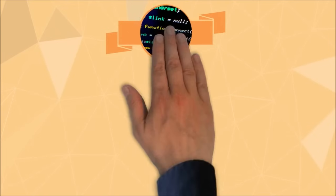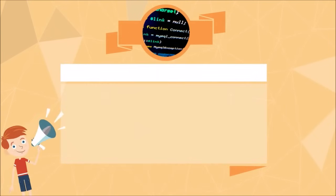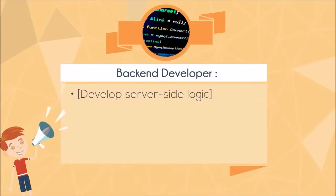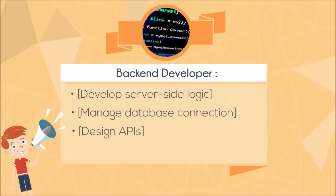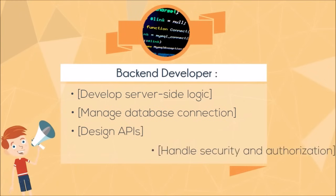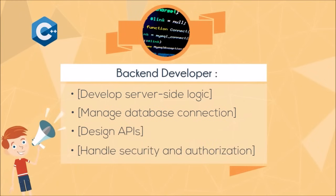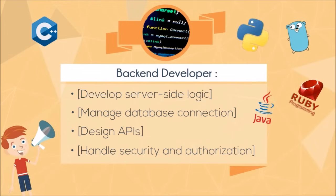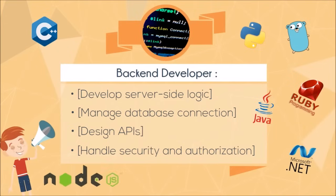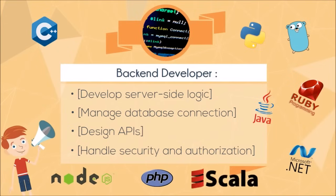Back End Developer: back end developers are those who work behind the scenes. They develop server-side logic, manage database connections, design APIs, and handle security and authorization. The main tools they use are Ruby, Node.js, PHP, Python, Golang, Java, Scala, and a great deal more. Back end developers also deal with databases.